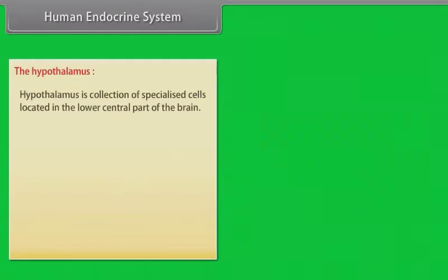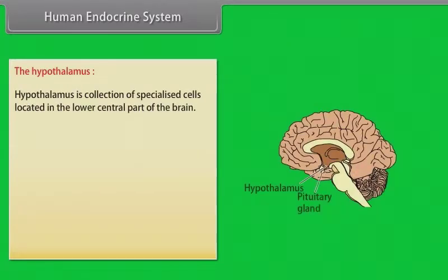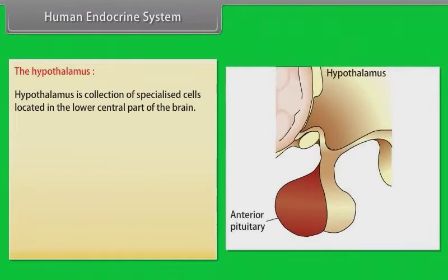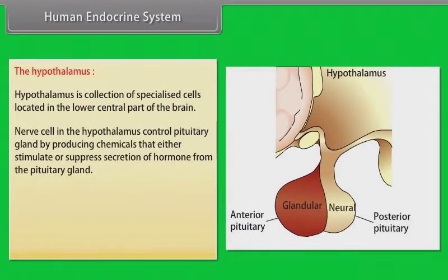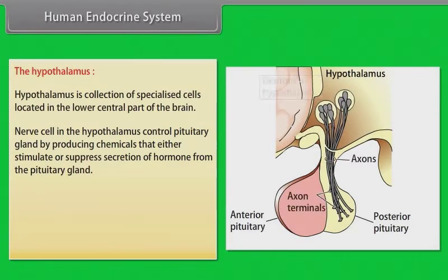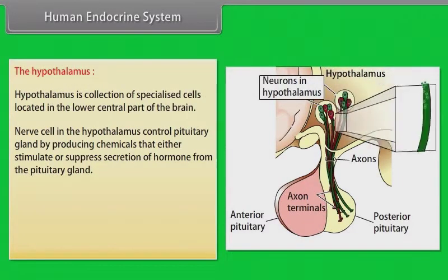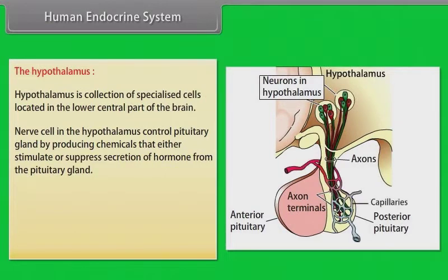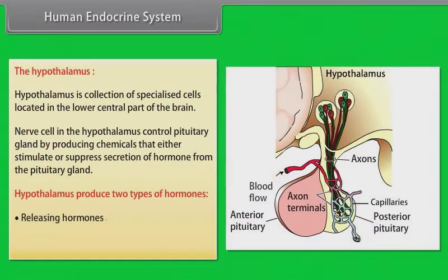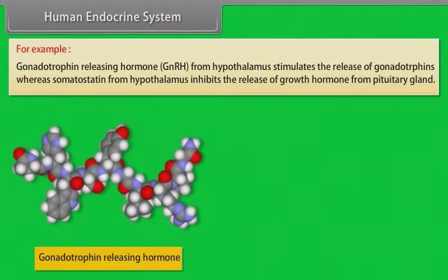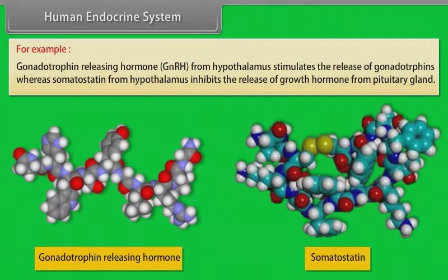The hypothalamus is a collection of specialized cells located in the lower central part of the brain. Nerve cells in the hypothalamus control the pituitary gland by producing chemicals that either stimulate or suppress secretion of hormones from the pituitary gland. Hypothalamus produces two types of hormones: releasing hormones and inhibiting hormones. For example, gonadotrophin releasing hormone stimulates the release of gonadotrophins, whereas somatostatin inhibits the release of growth hormones from the pituitary gland.